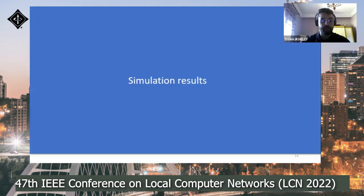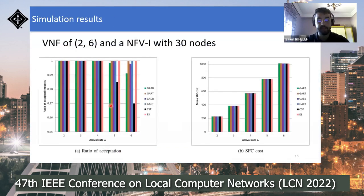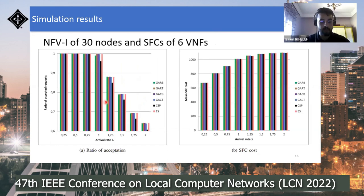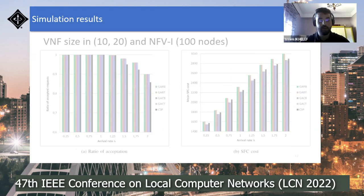Performance comparisons with ES and CSP algorithms demonstrate the effectiveness of our algorithm in optimizing allocation costs and increasing the ratio of accepted requests. Results also show that the acceptance rate of the genetic algorithm is almost the same as that of ES. When using CSP or other variants, the genetic algorithm does not decrease the acceptance rate, especially when using GARB or others.